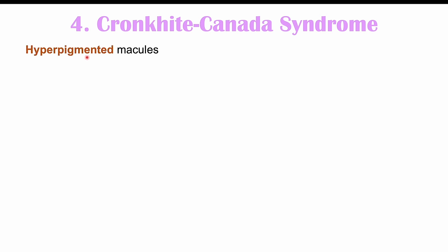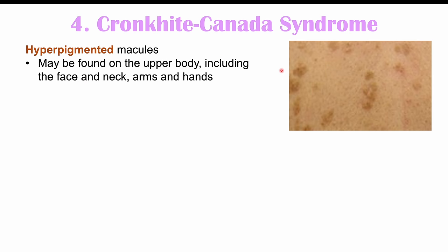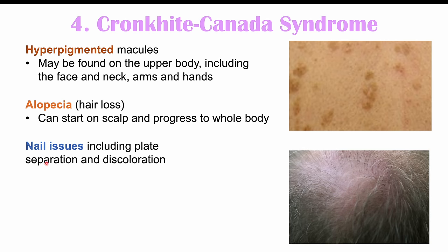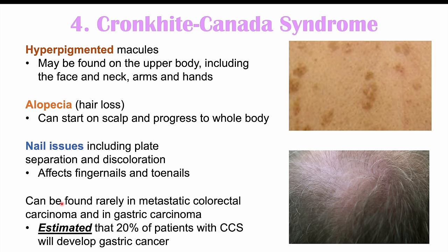Another skin manifestation we can see in gastric cancer is Cronkite-Canada syndrome, where we see hyperpigmented macules — flat skin lesions less than 10 millimeters in diameter, darker than the surrounding skin. We can often see it on the upper body, including the face, neck, arms, and hands, and are less likely to see it on the lower half. With Cronkite-Canada syndrome, we can also see alopecia, so hair loss starting on the scalp and progressing to the whole body, as well as nail issues including plate separation and discoloration of the nails affecting fingernails and toenails. Gastric carcinoma is an important cause — it's estimated that 20% of patients with Cronkite-Canada syndrome will develop gastric cancer if they don't already have it.